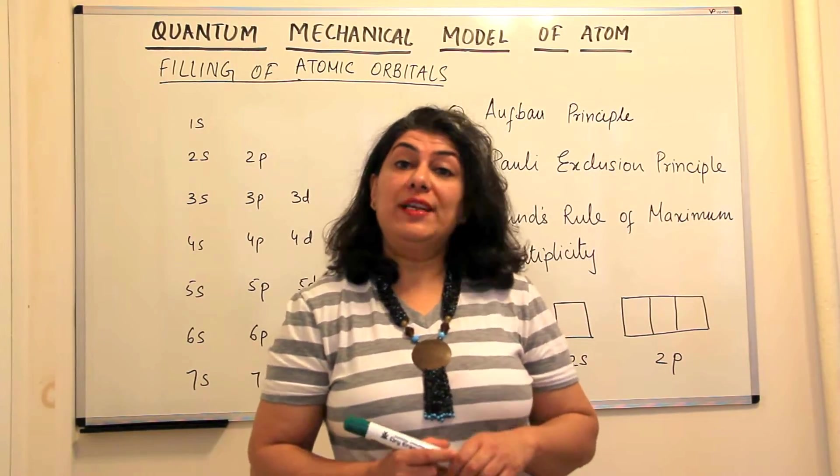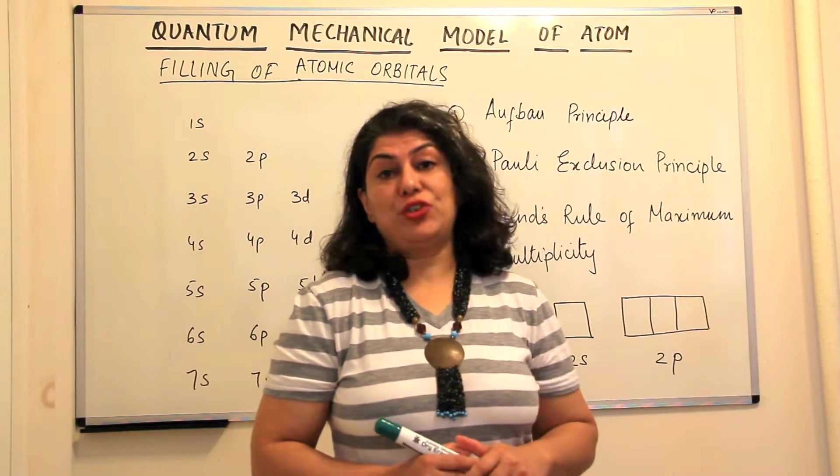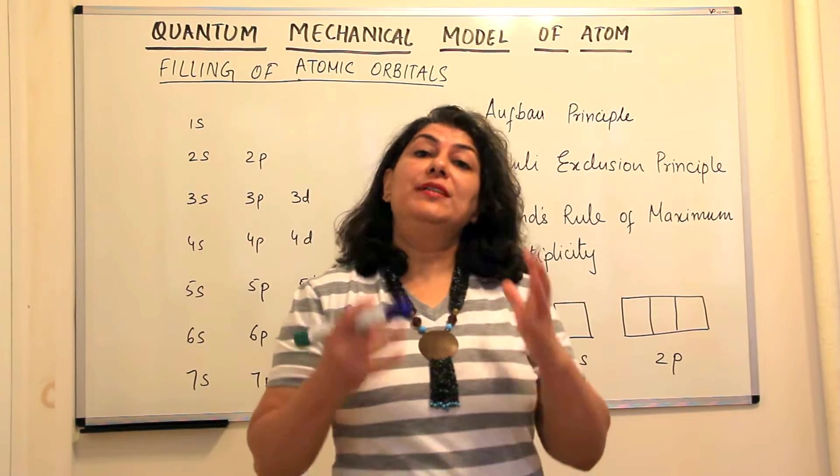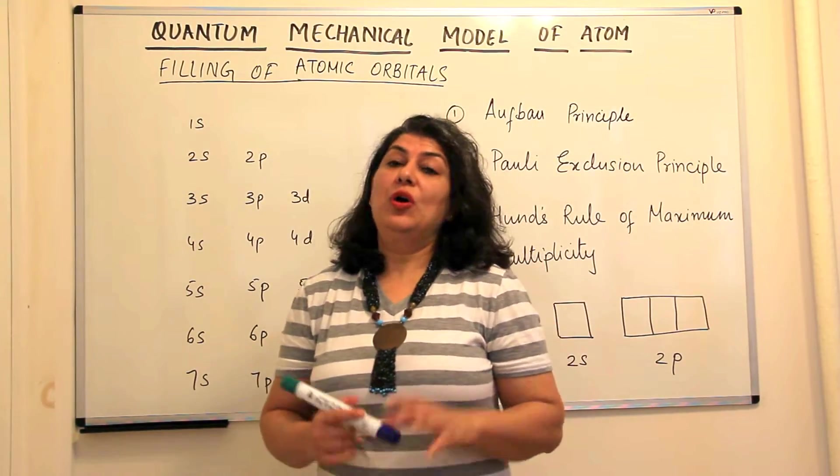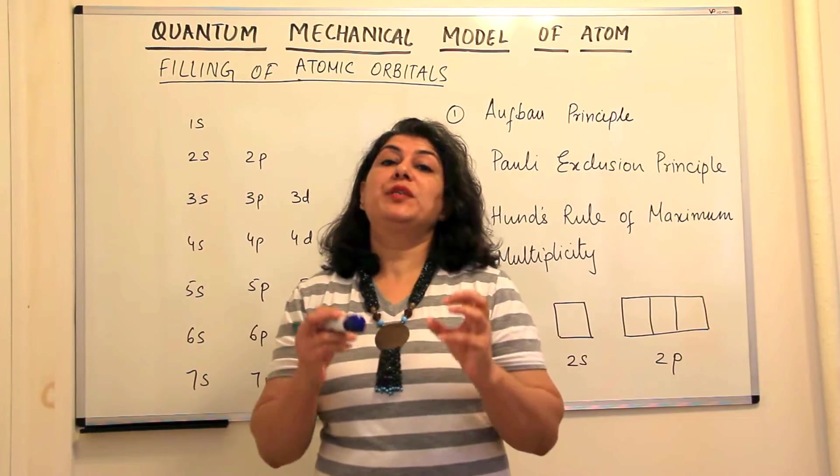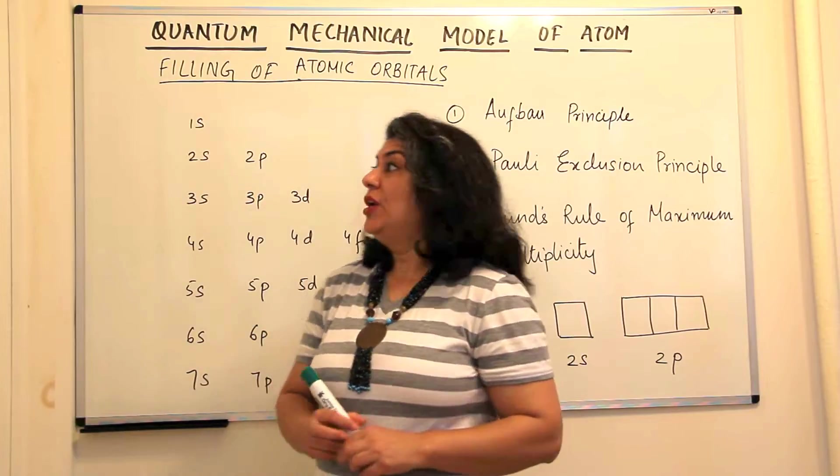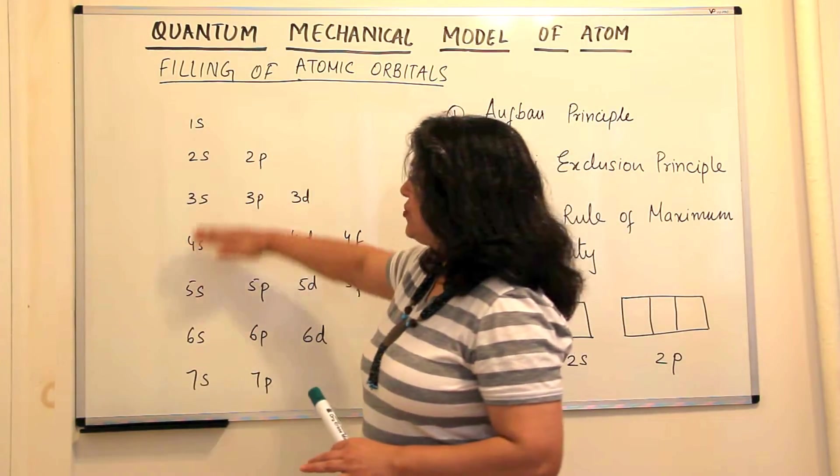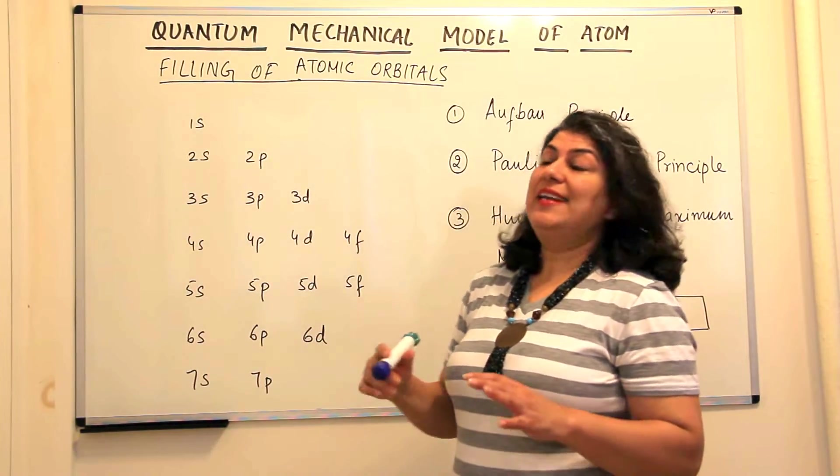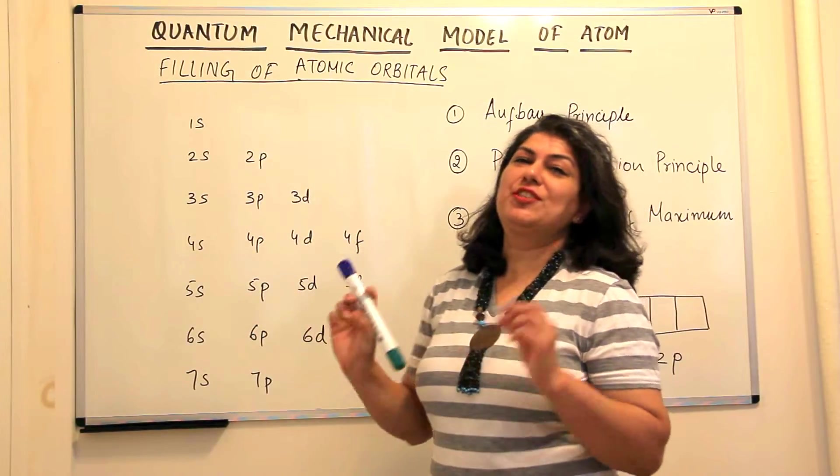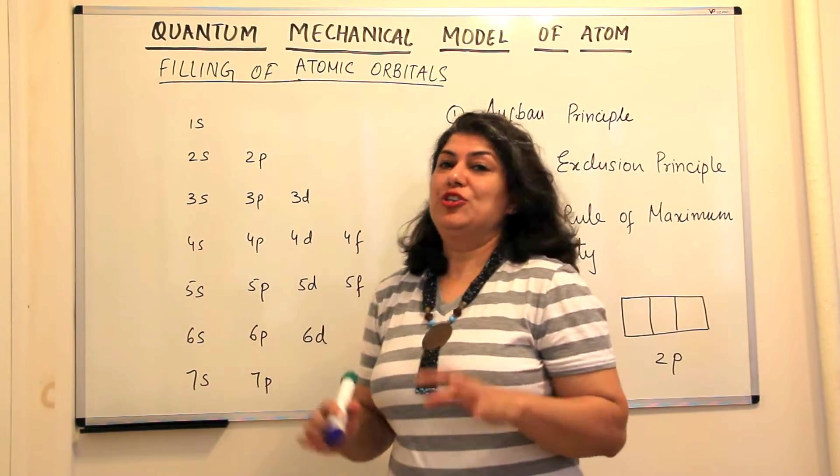In the previous video, I told you about the energies of atomic orbitals and how the n plus l value decides which orbital has lower energy and which has higher energy. So according to that, I've just written down all the orbitals and this is a diagram which is a very easy tool to learn or memorize.